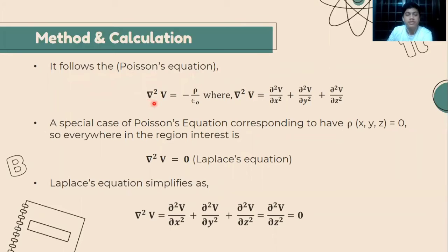The Poisson equation is ∇²V = ρ/ε₀, where ∇²V = d²V/dx² + d²V/dy² + d²V/dz². A special case of Poisson equation corresponding to ρ(x,y,z) = 0 everywhere in the region of interest is ∇²V = 0.